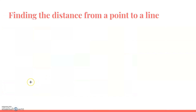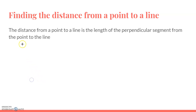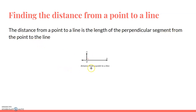First off, finding the distance from a point to a line. The distance from a point to a line is the length of the perpendicular segment from the point to a line. As you can see here, we have our point A and our line K. The distance is going to be the length of segment AB, and that's going to give us the distance from point A to line K.